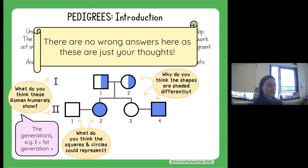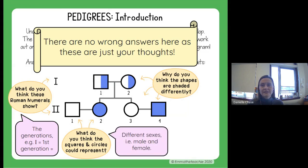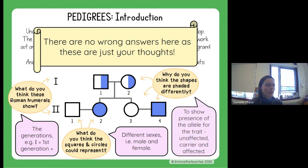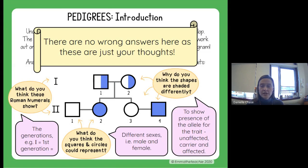The circles and squares represent the different sexes. Circles are for females, squares are for males. The blank shapes that are not shaded mean they are either normal or unaffected — they do not have that particular trait and don't carry an allele for it.